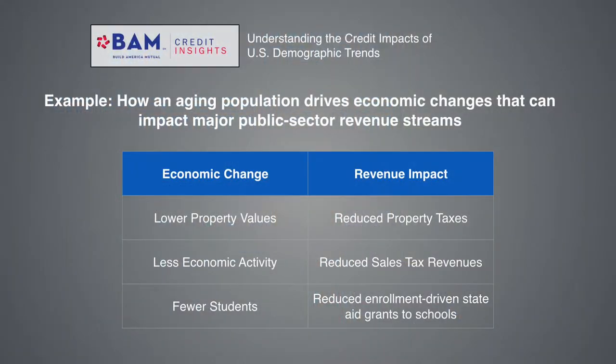Demographic changes primarily impact issuers' budgets, and that's both the revenue and expenditure side. This in turn translates into impact on property values, economic activity, and in turn property taxes and sales tax revenues. Additionally, school enrollment is also impacted, and that translates to driving state aid for school districts. On the expense side, an aging population puts demand on higher health and human service spending.